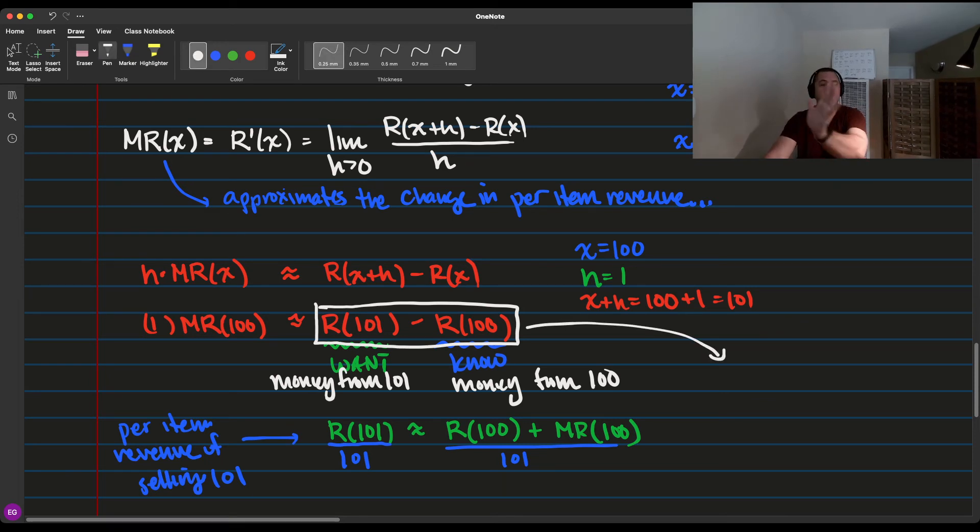R(101) is the money made from selling 101. So if you subtract them, what is this number actually equal to? The one on the left is how much you made from selling 101. The one on the right is how much you made from selling 100. If you subtract those, it gives you what value? This is a little tricky. I want to see if it makes sense or not.